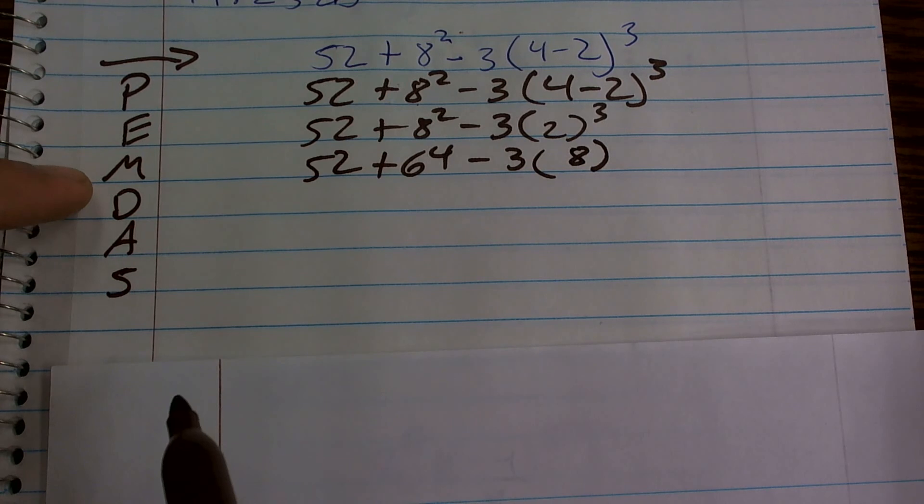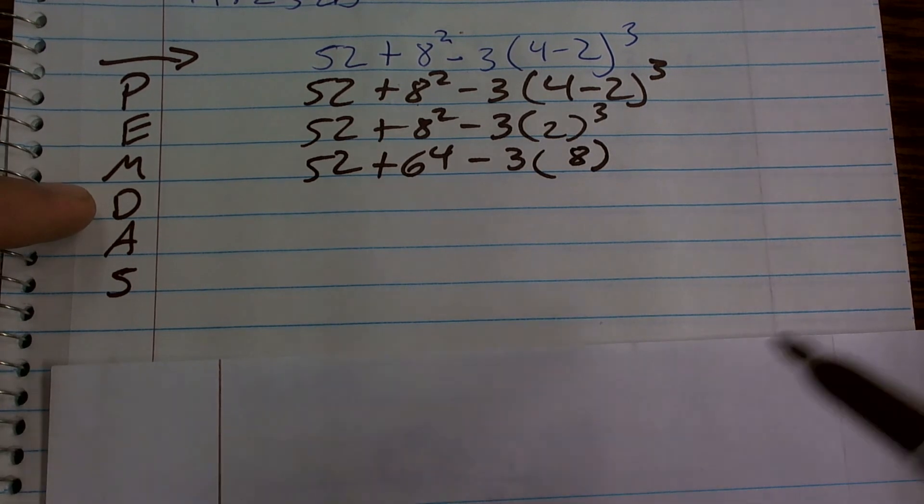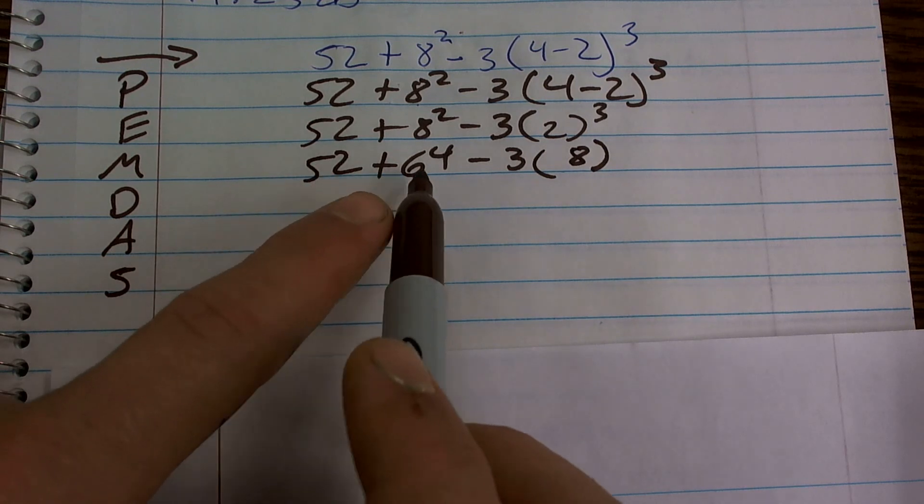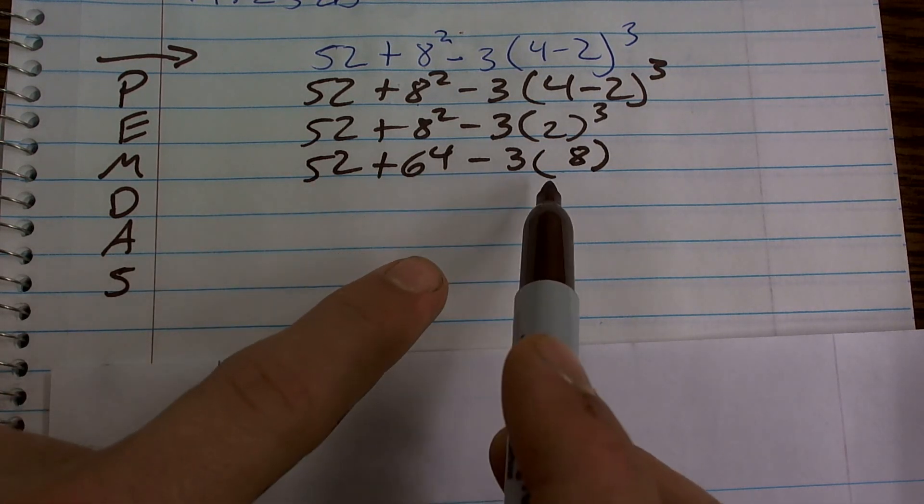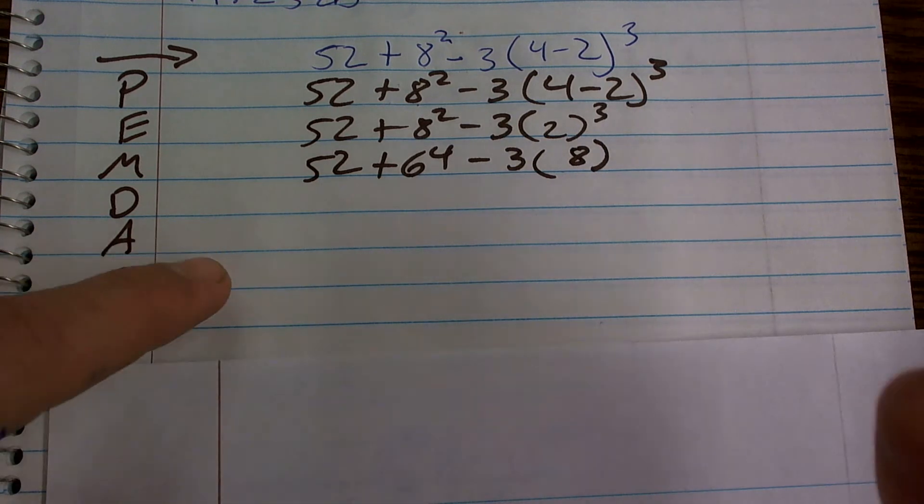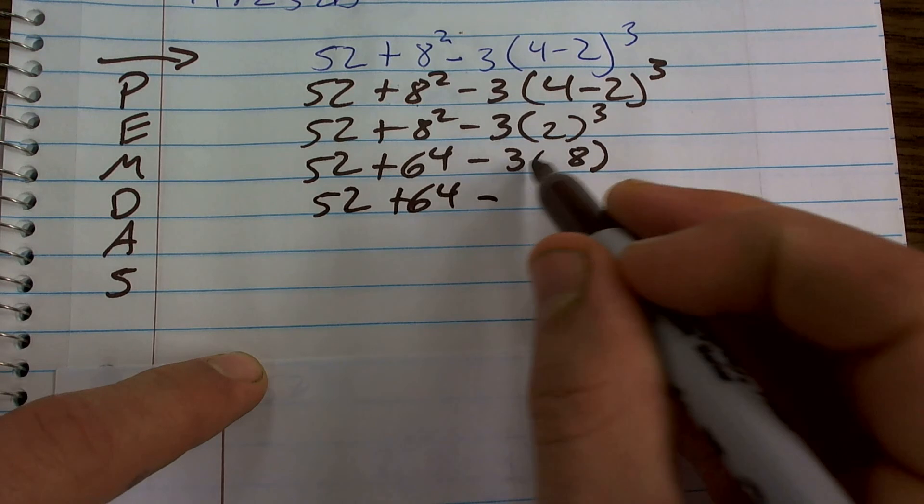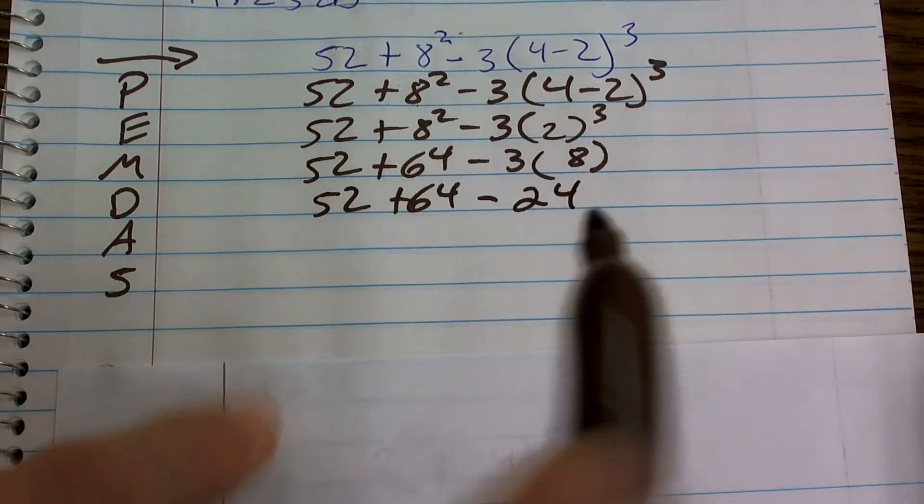Then I need to do multiplication and division from left to right. So I just work from left to right and see if there's any multiplication or division going on. So I have 52 plus 64 minus 3 times 8, which is 24.